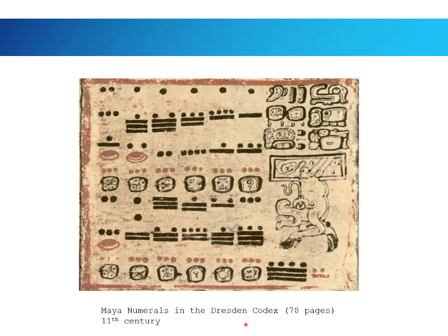Here's a photo of a page from an ancient Mayan document. This is called the Dresden Codex. It's in fact 78 pages long, and it comes from the 11th century. But here's one page of it, and you can see definitely some interesting Mayan numerals, along with some other interesting Mayan writing.